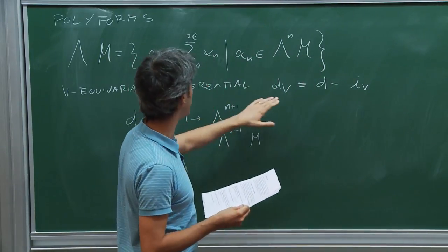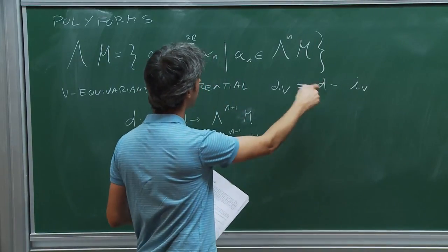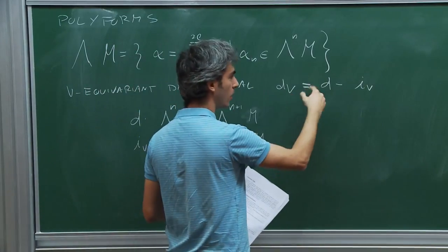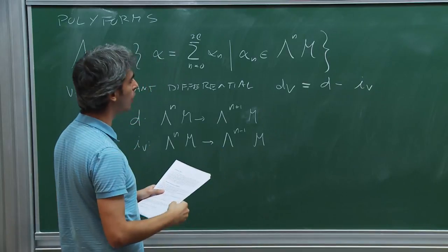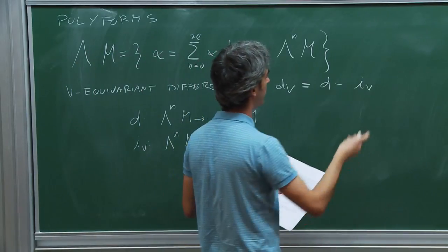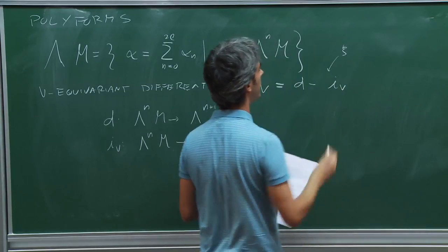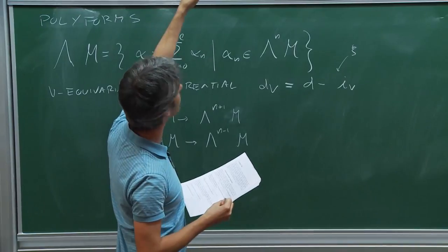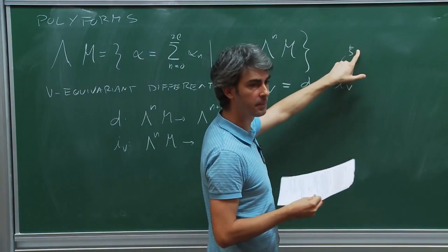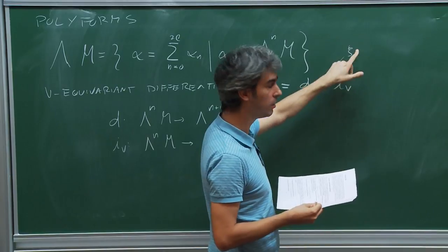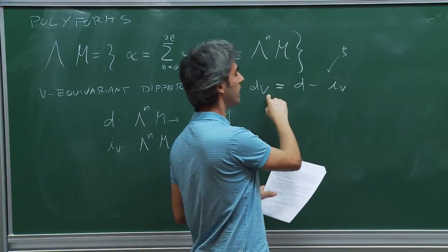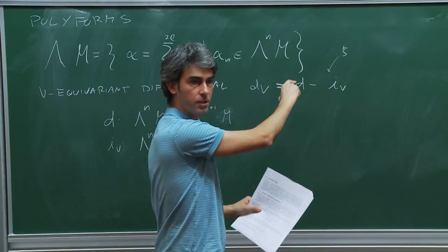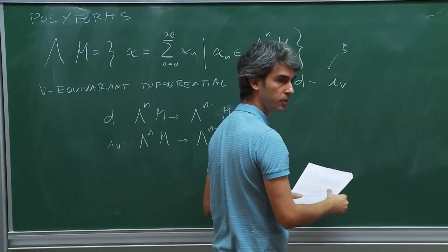The operator d acts as the standard differential, mapping an n-form to an (n+1)-form, while the contraction with V maps an n-form to an (n-1)-form. So d_V mixes forms of different degree, which is the reason why we need this space of polyforms. This might look inconvenient — we had a grading and now we are losing it. This could be solved by introducing a parameter xi in the Lie algebra of G and assigning it degree 2, so that the differential preserves the degree. But for the U(1) case we will not do that.